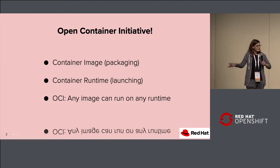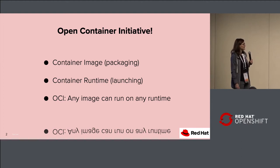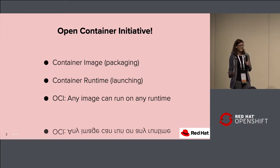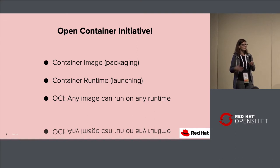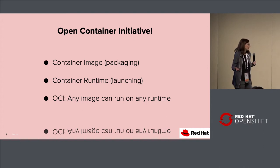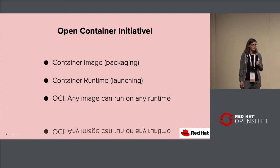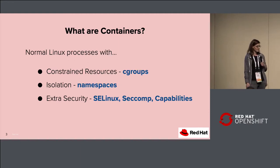What's a container image? It's a tarred-up set of layers with a JSON file description. There's a base layer, usually an operating system user space layer. Additional layers are packages or binaries, dependencies — anything you need on top of that operating system. That's a container image. If it's an OCI image, it follows certain specs defined by the OCI.